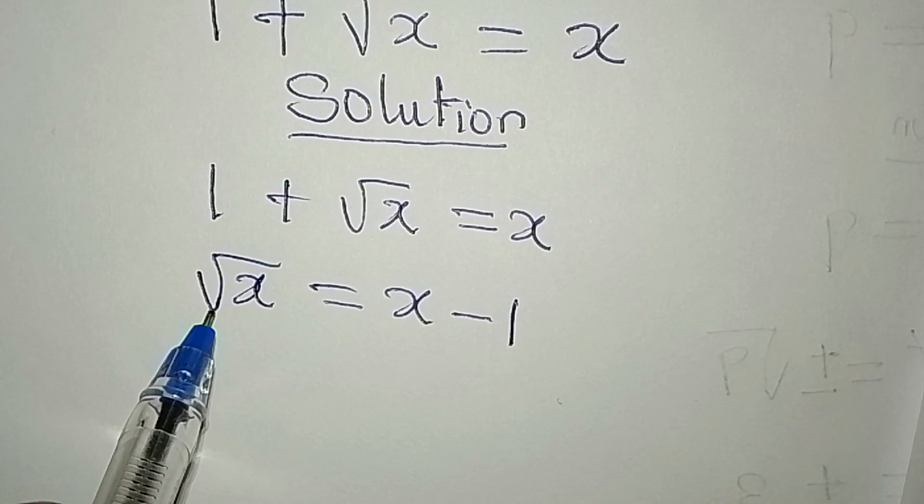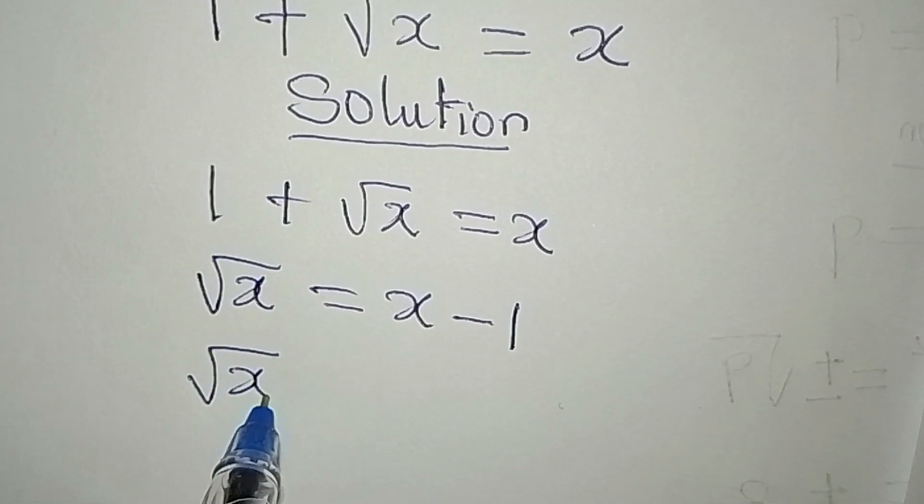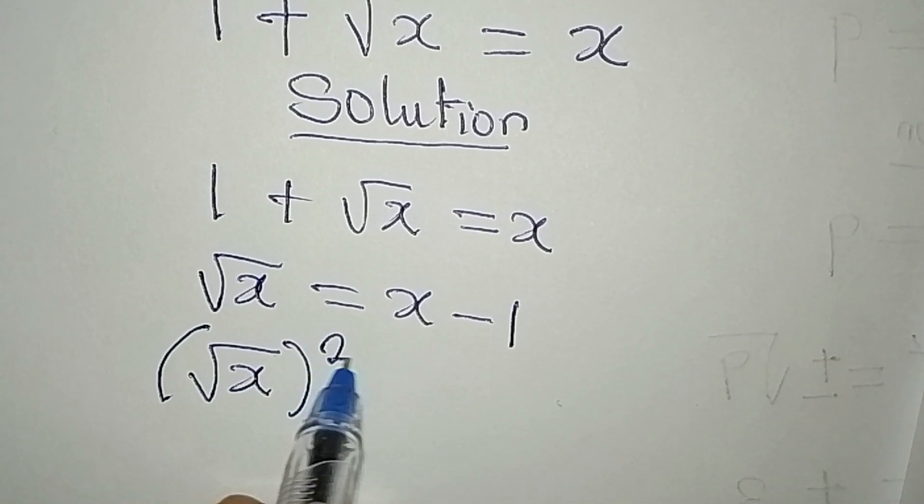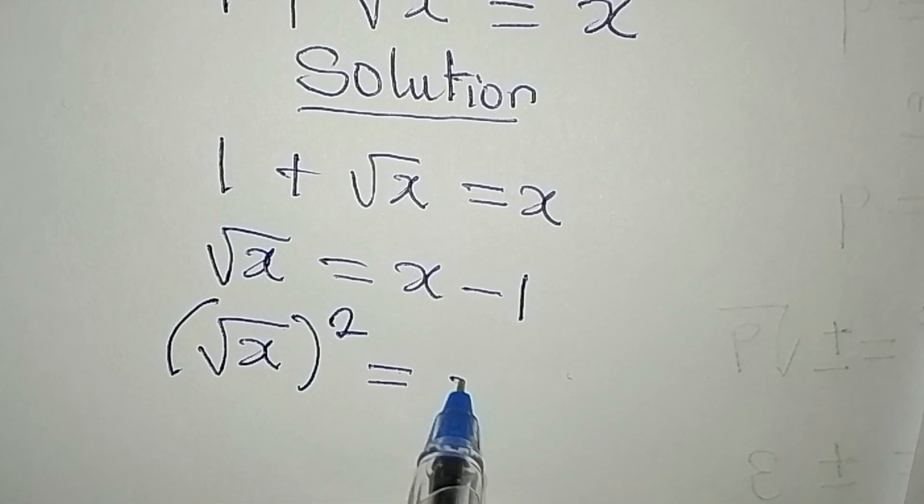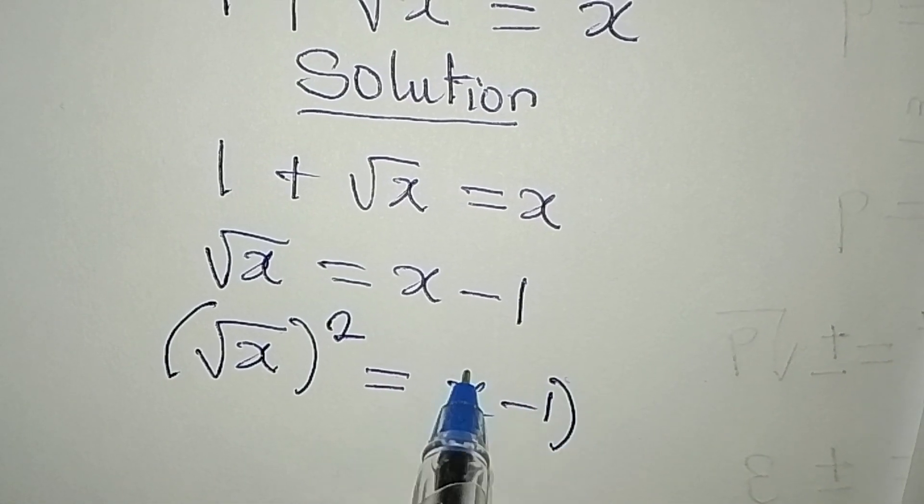And then because of this square root, you know I can square this so that the square root will be eliminated. And if you square the left hand side, you have to square the right hand side.